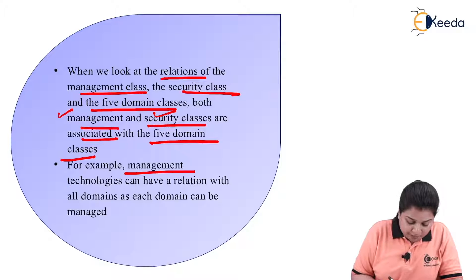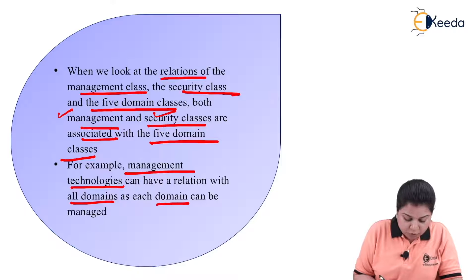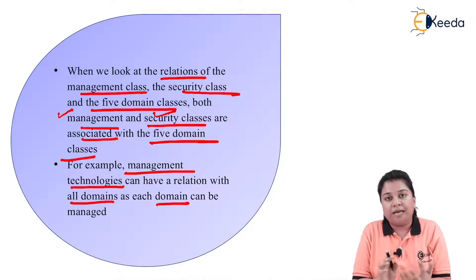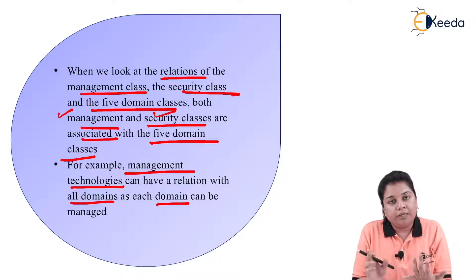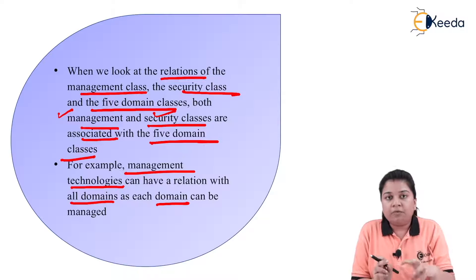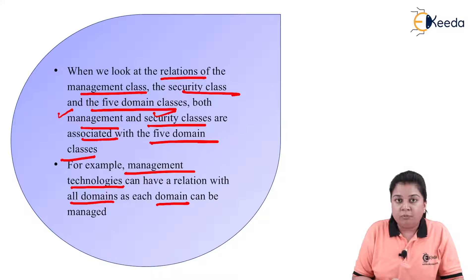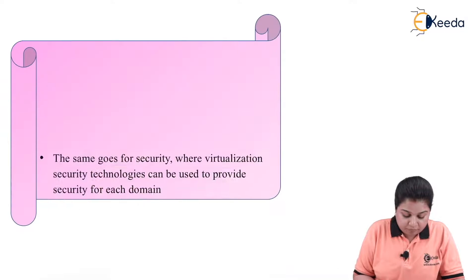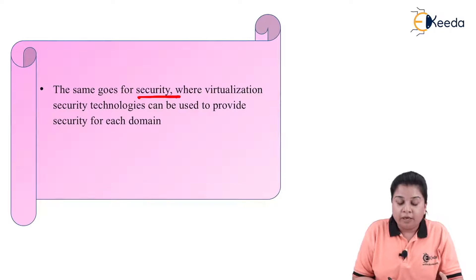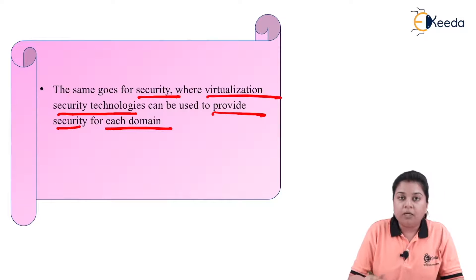For example, management technologies can have a relation with all domains, as each domain can be managed. That means the network domain can be managed, the server domain can be managed, the application domain can be managed, desktop, operating system — everything can be managed. Thus it is related to all five domains. The same goes for security, where virtualization security technologies can be used to provide security for each domain.